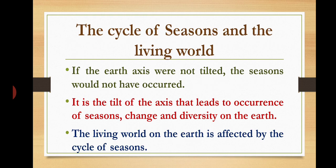The cycle of seasons and the living world: let us see how the cycle of seasons and the living world are correlated. If the Earth's axis were not tilted, seasons would not occur — it is the tilt of the axis that leads to the occurrence of seasonal change and diversity on the Earth. The living world on Earth is greatly affected by the cycle of seasons.